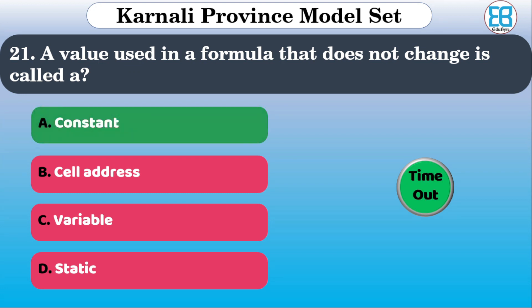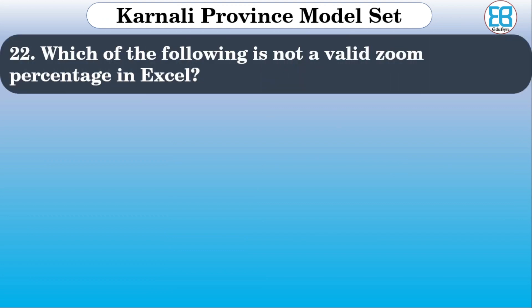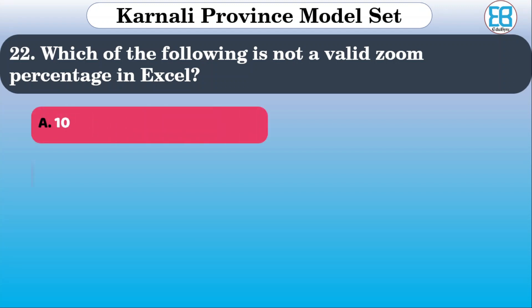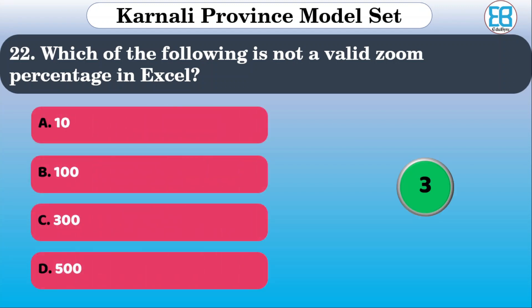Which of the following is not a valid zoom percent in Excel? The options include 10, 30, and others. The correct option is option D.